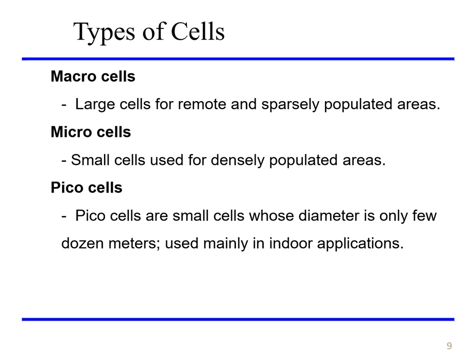There are different types of cells. Macro cells are large cells used for remote and sparsely populated areas, such as rural areas, to accommodate more traffic. Micro cells are small cells used for densely populated areas, with a diameter of only a few dozen meters, used mainly for indoor applications.